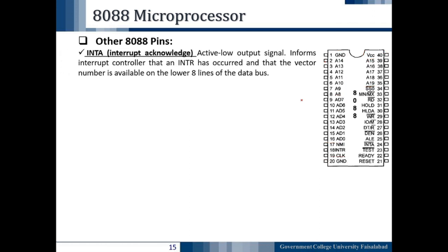The first pin we are going to discuss is the interrupt acknowledgement pin INTA bar. Pin number 24 is the interrupt acknowledgement. The bar on the pin indicates that it is active low, meaning it works for low voltages. It is an active low output signal that informs the interrupt controller that an interrupt request has occurred and that the vector number is available on the lower eight lines of the data bus.